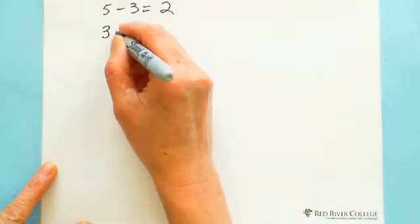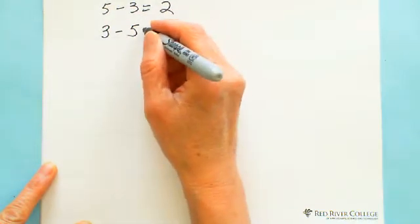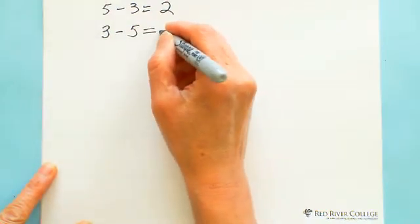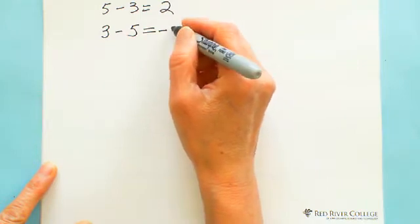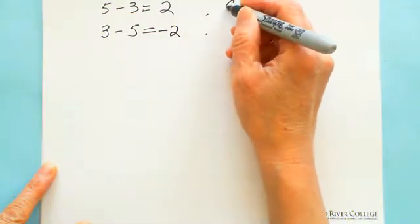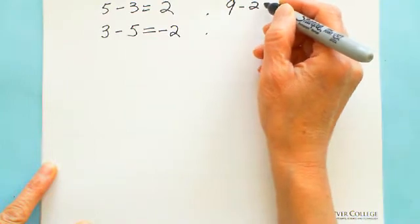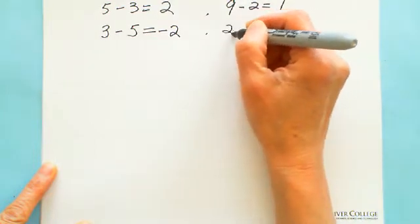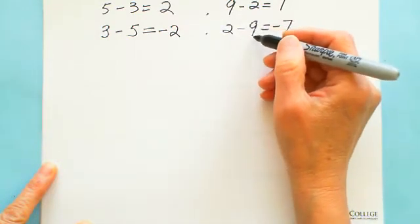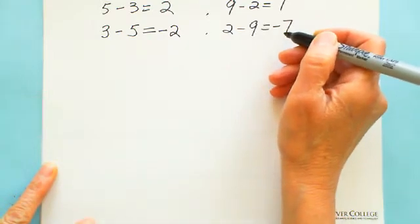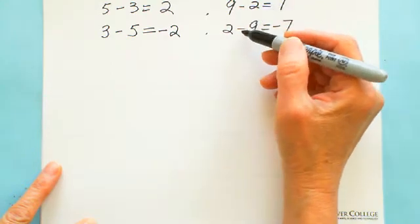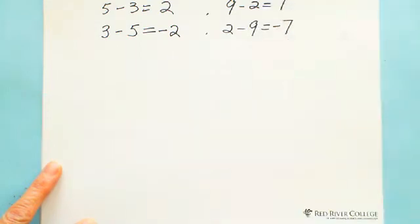If 3 minus 5 — because 3 is less than 5, so the answer will be negative. Another example: 9 minus 2 equals 7. 2 minus 9 equals negative 7, because 2 is smaller than 9, so the answer will be negative. Positive answer means 9 is greater than 2; negative answer means 2 is less than 9. This is very obvious.